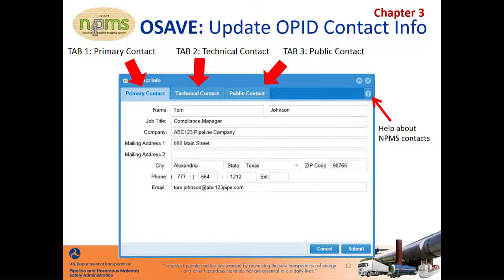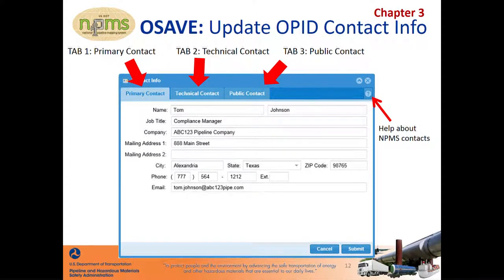If a change to the emergency contact is needed, you need to email NPMS staff requesting the change. You'll also need to make the same change in the FEMSA portal so that the next export from the portal does not overwrite NPMS's change. Please note that the OSAVE contact information relates only to pipelines. For changes to the contact information associated with your LNG plant or breakout tanks, contact NPMS staff.